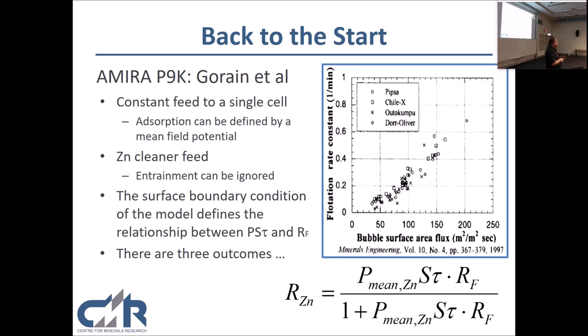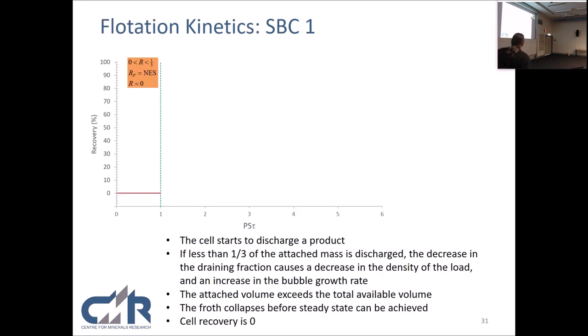It's the only condition that can. You carry on pushing it, get to 50 percent, it can no longer equilibrate there, and we have another solution for the boundary condition. And it's all related to the fact that material going up, some goes out, it has to find a way to balance the reabsorption versus the discharge. And there's one unique solution. So, let's have a look at that, because this is now prediction. So, the cell starts to discharge the product, it is less than a third. The decrease in the drainage interaction causes a decrease in the density of the load and an increase in the bubble growth rate. The attached volume exceeds the total volume, because now it's growing faster. The froth collapses before steady state can be achieved. Cell recovery is zero. I've run plenty of cells, column cells particularly, and I've seen this behavior. You put them on, and you want a nice low flow, and the thing is, it just keeps dying. And you have to overwind it, let it settle down, and you gently pull it back. So, I've seen this behavior.